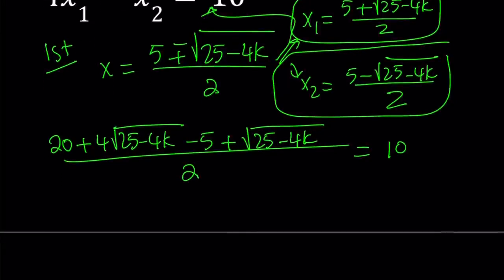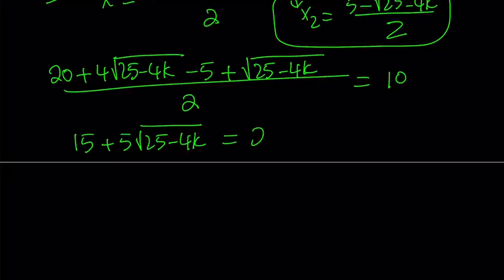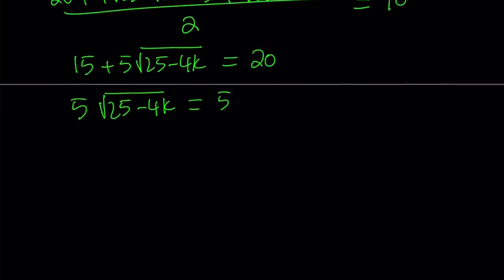We have some like terms in the numerator. Let's simplify this fraction. 20 minus 5 is 15. And now we have 4 times the radical plus 1 times the same radical, which makes 5 times that. All of that is divided by 2, and that equals 10. If you just cross multiply, 2 times 10 gives you 20. Subtract 15 from both sides and you get 5. Divide both sides by 5 and you get the radical equals 1.